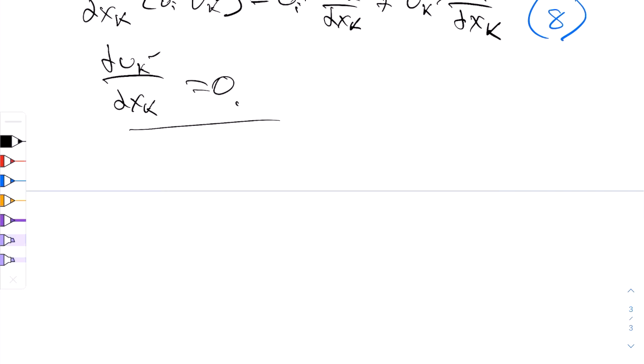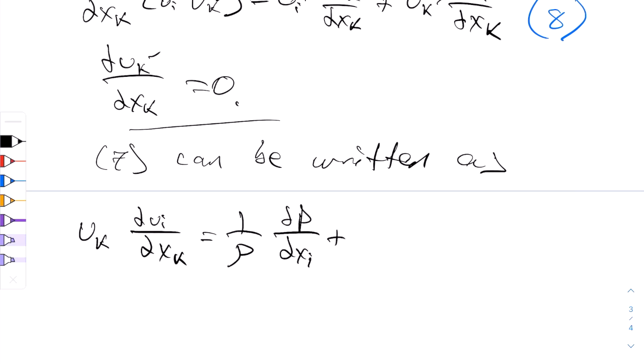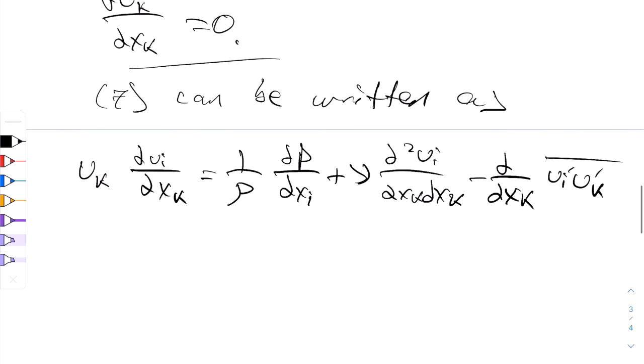Now let's try and rewrite 7 again into a slightly simpler form. So 7 can be written as uk partial ui partial xk is all equal to negative 1 over rho partial of partial p partial xk plus the viscosity partial 2 ui partial xk partial xk minus partial partial xk of ui uk. And these are primed of a bar. And you'll see that this is indeed this equation, which is so important in this class, we'll call it 10.